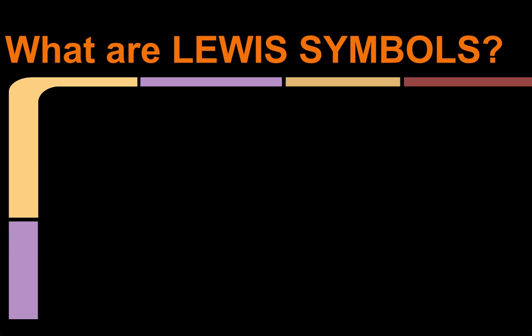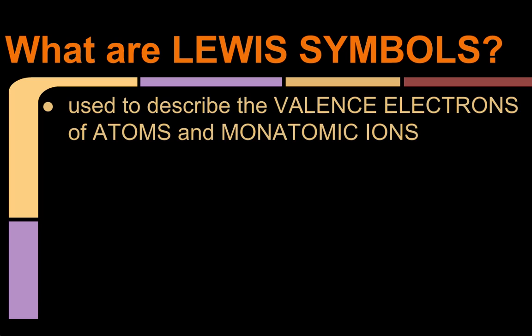So what are Lewis symbols and how is that related to what I just talked about? Well, Lewis symbols are used to describe the valence electrons of atoms and monatomic ions, which are just ions with one atom. So monatomic means one atom.